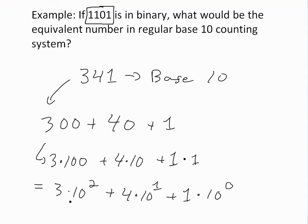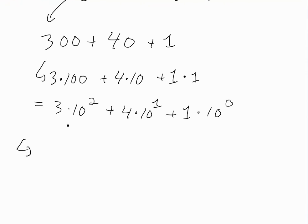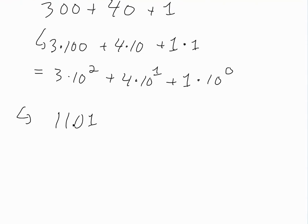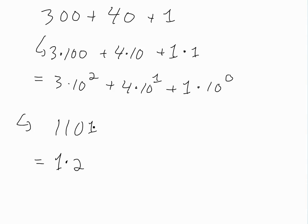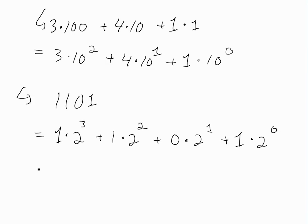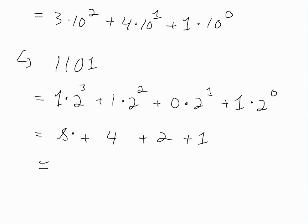In base 2 we do exactly the same thing, except we multiply by 2 to the power of the position. So for 1101, this breaks down as: 1 times 2 to the 3, plus 1 times 2 to the 2, plus 0 times 2 to the 1, plus 1 times 2 to the 0. That equals 8 plus 4 plus 0 plus 1, which gives us 13... so we're going to get 15 right here.